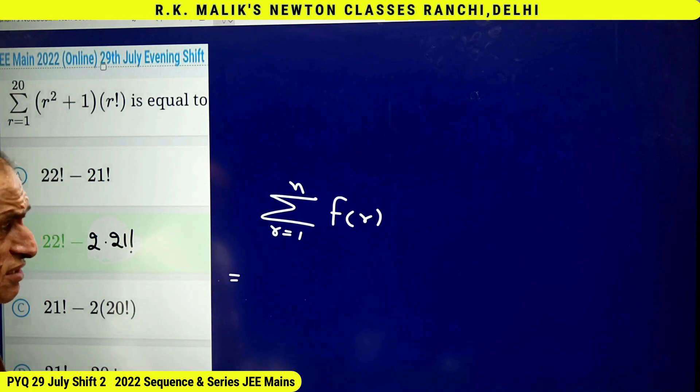Every term of the first bracket gets cancelled with the second term of the next bracket, so in the first part only 22! remains and from the start only 2! is left. In the second part similarly, 21! minus 1! remain after cancellations. Therefore the answer is 22! minus 2 times (21! minus 1), which equals 22! minus 2 times 21! with minus 2 and plus 2 cancelling, giving the final result. Hence choice B is the correct answer.